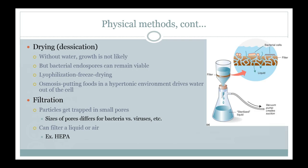Filtration traps different particles. If you filter a liquid, the liquid is small enough to pass through the pores — about half a micrometer — but bacterial cells are not. The liquid goes through and becomes sterilized, while bacteria get trapped in the filter, with a vacuum creating suction. This can be done with liquid or air — you may have heard of a HEPA filter on a vacuum cleaner.